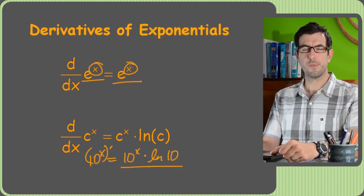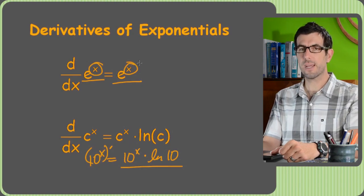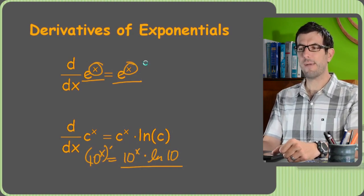So if anything, just reiterate: if the exponent is anything besides x—2x, 5x, x squared, x to the 5th, 1 over x squared, anything—you have to use the chain rule.